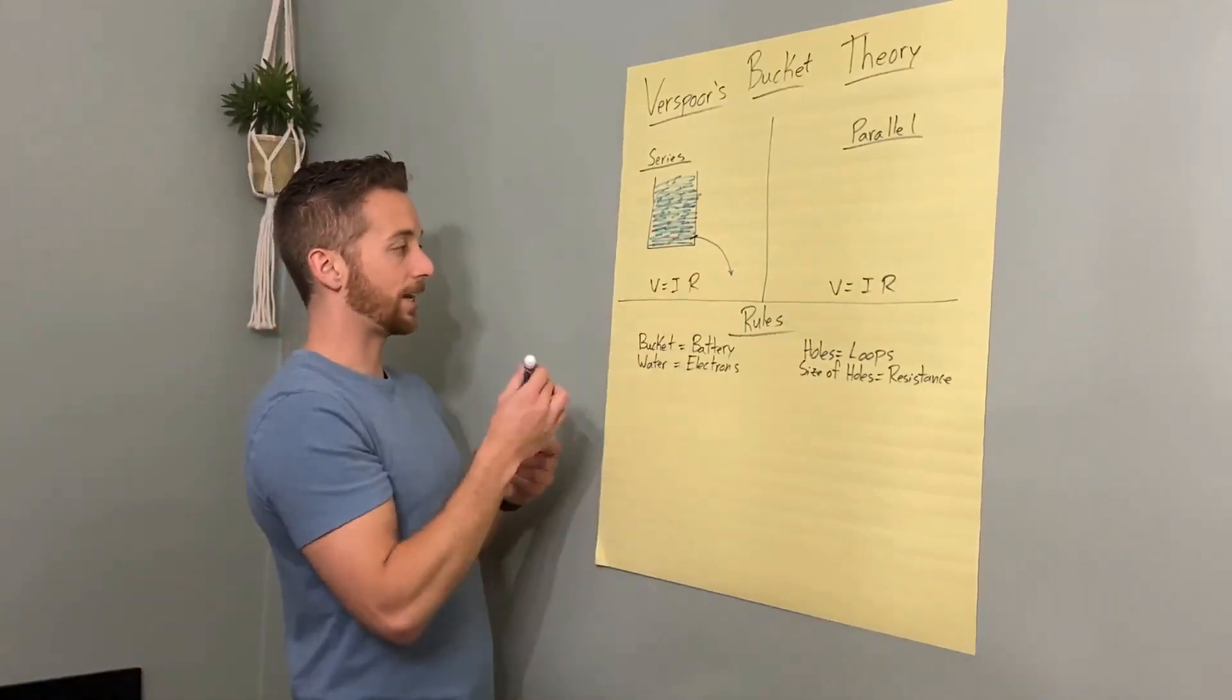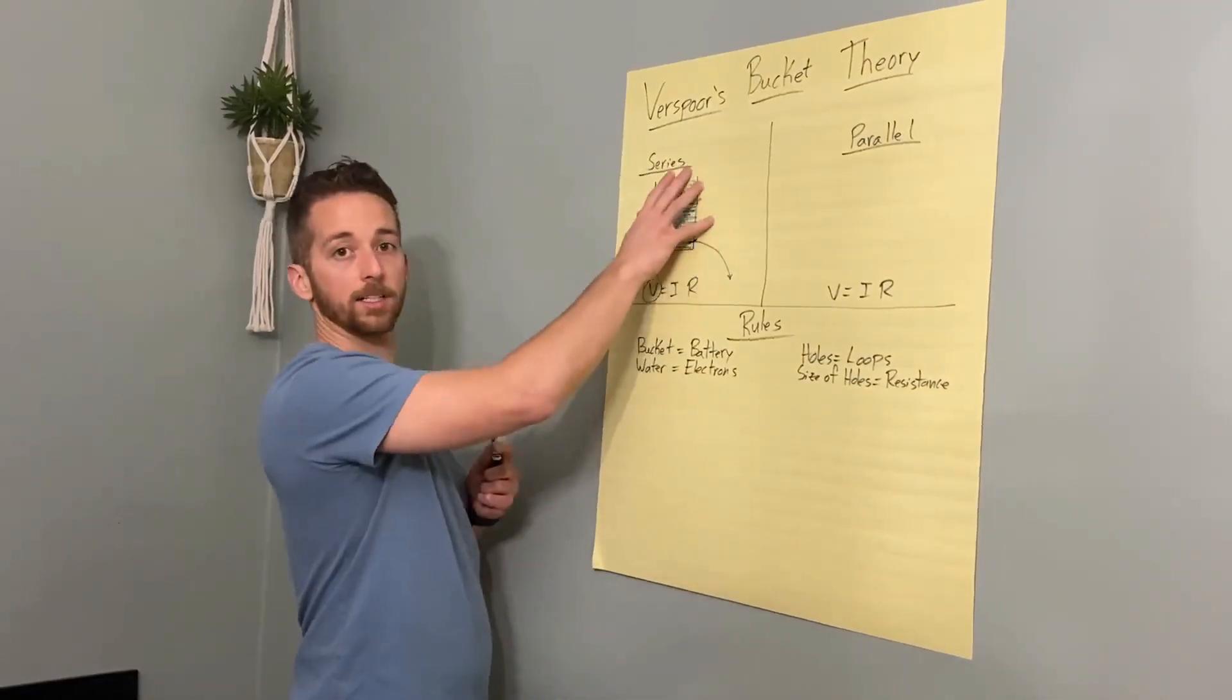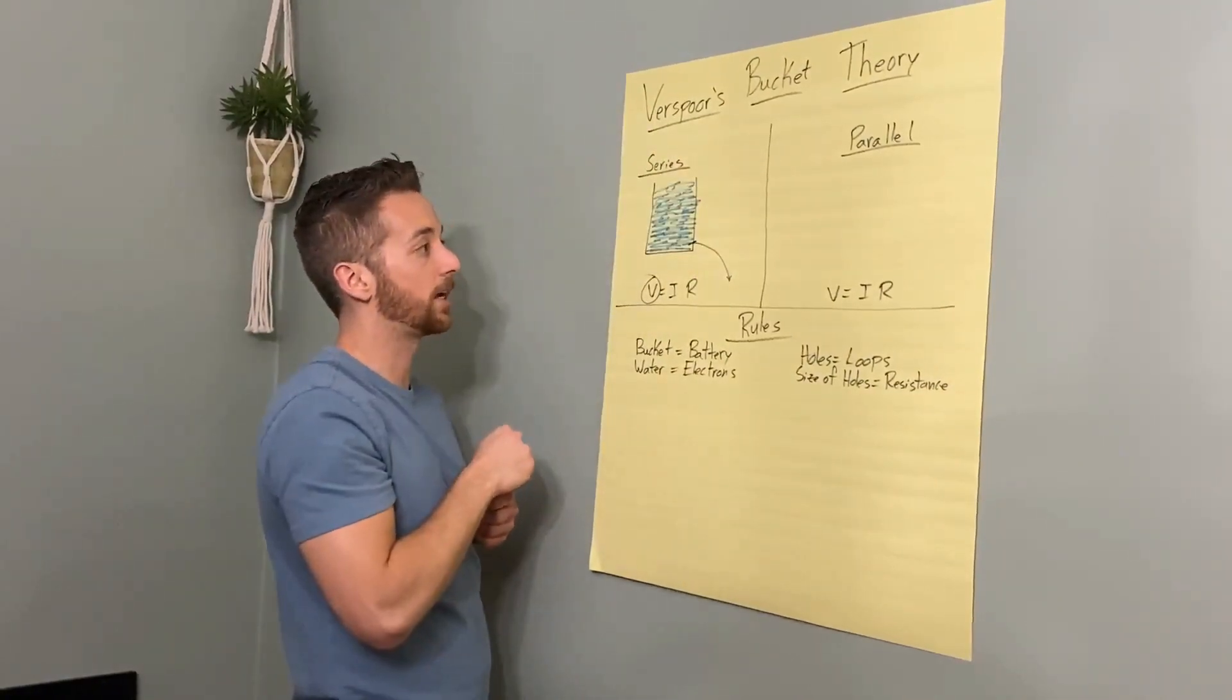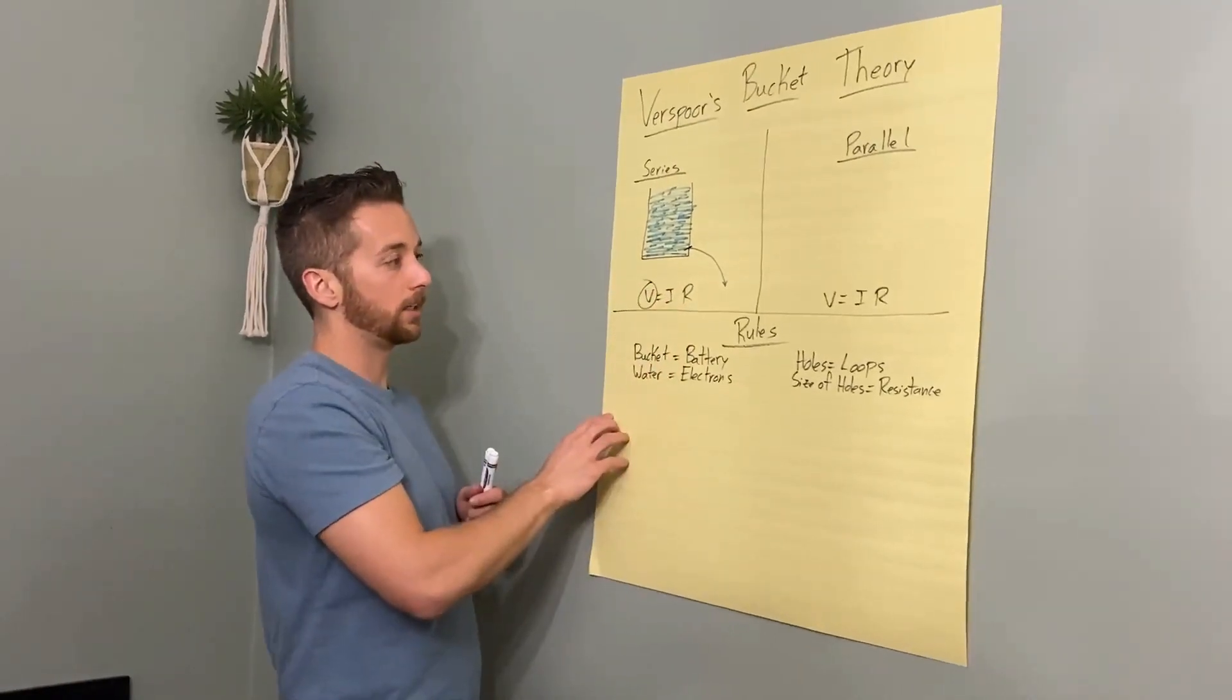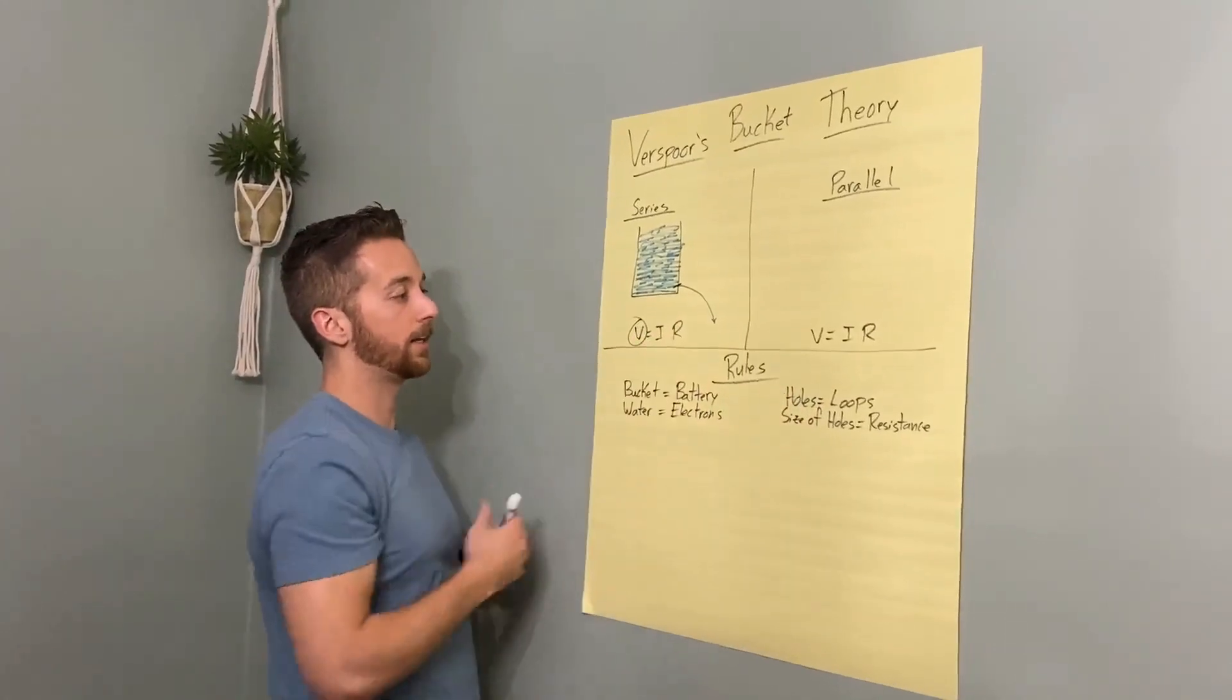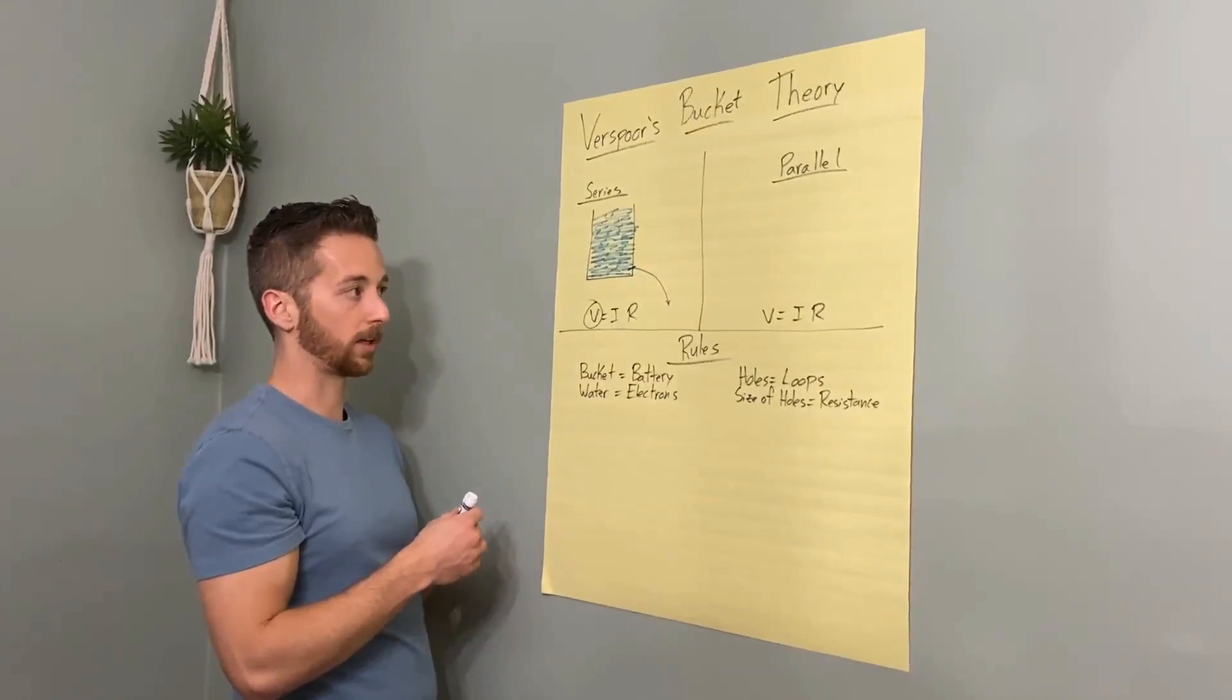So there we go. You have a constant voltage here because the battery isn't changing. The battery's a 9 volt, 6 volt battery, 1.5 volt battery, whatever. Your current is determined by that, and there's your resistance. So in a series circuit with nothing changing, that's what it will look like.